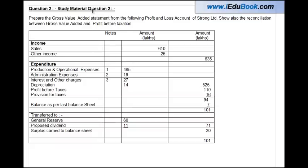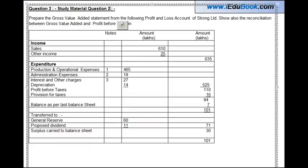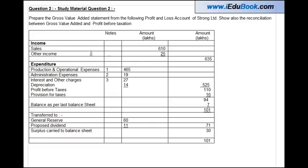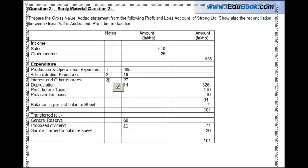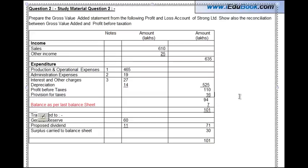This is question number two from the study material. The income includes sales of 610 and other income of 25. Expenditure includes production and overhead expenses, admin expenses, and there are certain notes attached to each. Interest and other charges, depreciation, profit before taxes, and provision for taxes are also given. Additionally, there is a balance from the last balance sheet, meaning some profit balance is available from the previous year.